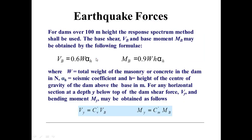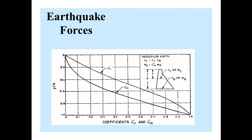For dams over 100 meters height, the response factor method shall be used. The base shear V_B and base moment M_B may be obtained by: V_B = 0.6 × W × alpha_H, and M_B = 0.9 × W × H × alpha_H, where W is the total weight of the dam in Newtons, alpha_H is the horizontal seismic coefficient, and H is the height of the center of gravity of the dam above the base in meters. For any horizontal section at depth y below the top of the dam, shear force V_y = C_V' × V_B and bending moment M_y = C_M' × M_B. The values of C_V' and C_M' are obtained from the corresponding diagram.